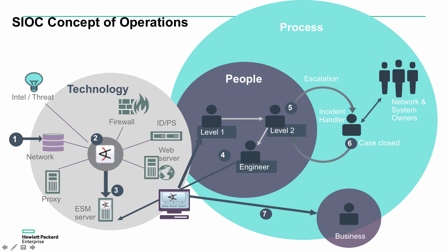In a lot of cases, the incident handler is actually talking to the network, system, and application owners directly - asking who did this, what does this mean, what does this particular activity on this application mean. They'll iterate through this escalation and incident handling process until the case is closed. Typically the level two analyst running the analysis and doing the investigation will identify something suspicious and feed that back through to the platform engineer - a new person involved here. This is somebody who is typically creating content for the ArcSight environment: creating rules, dashboards, reports, and so on, putting that into the system to help further detection and perfect the correlation and notifications.